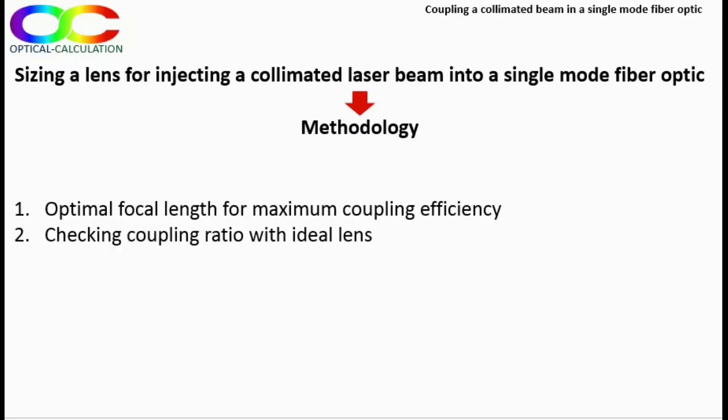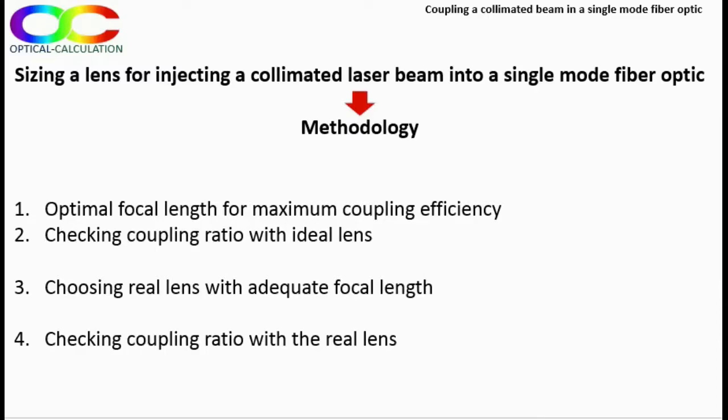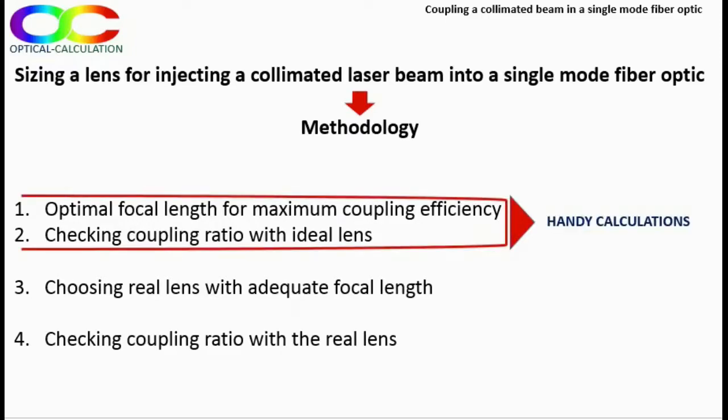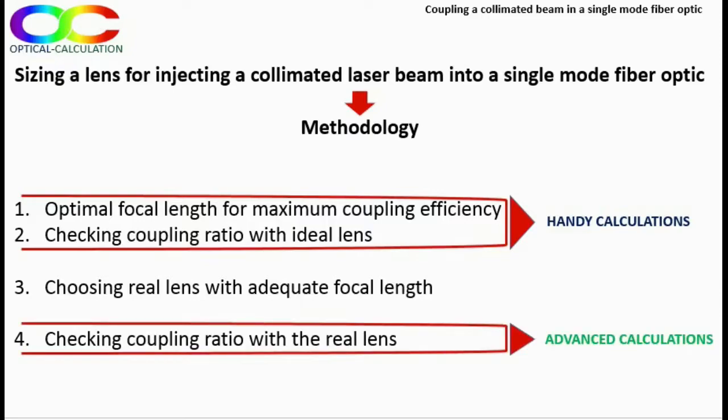Second step, the coupling ratio has to be checked using an ideal lens with the previously calculated focal length. Third step, a real lens with the previously calculated focal length and with minimized spherical aberration must be designed or chosen in a commercial catalog. And fourth step, the coupling ratio with this real lens must be calculated. Steps one and two can be processed with the handy calculations tool and step four with the advanced calculations one.